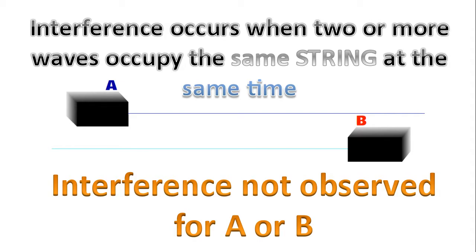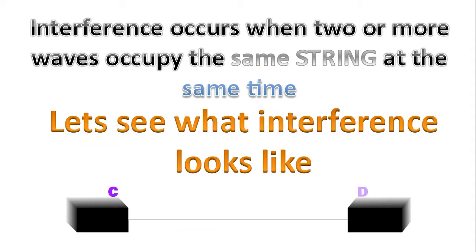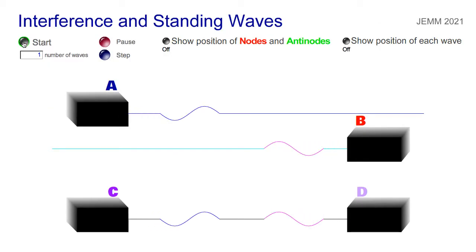Interference will not be observed for wave generator A or wave generator B because there's only one wave on the string. You need something else to interfere with. So let's see what interference looks like. Please focus your attention on wave generator C and wave generator D, as that's where we'll see interference.